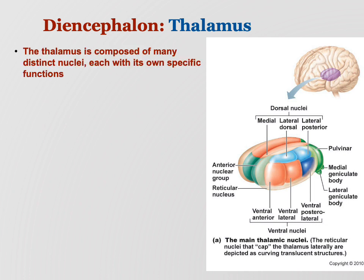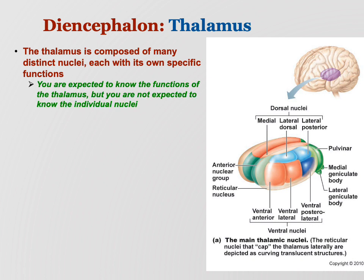The thalamus is made up of many different nuclei — remember, a nucleus is a collection of neuron cell bodies inside the central nervous system, whereas a ganglion is a collection in the peripheral nervous system. Back when I taught a neuroscience class, students had to learn all the different nuclei and what they did, but we won't do that in Bio 200. I do expect you to know the kinds of things the thalamus does overall. I'll go through the nuclei to show their specific jobs — just try to get an overall picture.